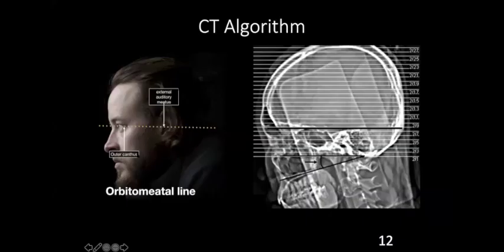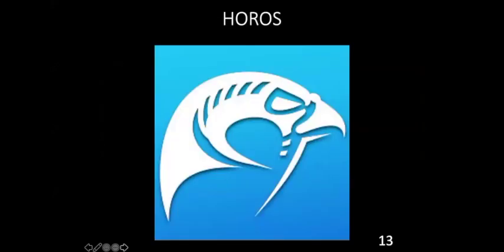Regarding the CT algorithm, the latest CT scanners with more than 16 slices take sections only in the axial plane — in the orbital plane, parallel to the floor. Then they use the CT algorithm to reconstruct coronal, sagittal, and other required views. Unlike older CT scanners, they don't have to put the patient in different positions, which caused discomfort.